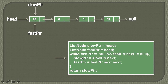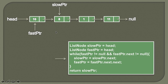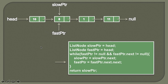The first statement says we need to assign slow pointer's next value to the slow pointer — we traverse the slow pointer to its next value. The slow pointer points to the first node, so we traverse it to the second node. Now we need to traverse the fast pointer twice. The fast pointer points to the first node (10), and we assign fast pointer's next-next value to it. Fast pointer's next would be 8, and its next would be 1, so the fast pointer now points to 1.